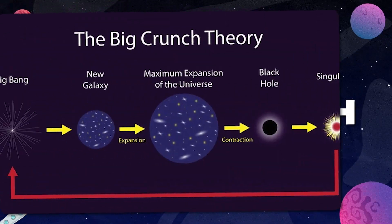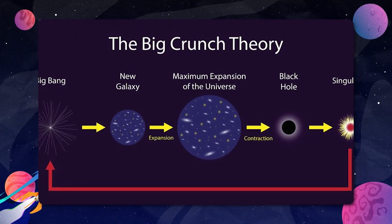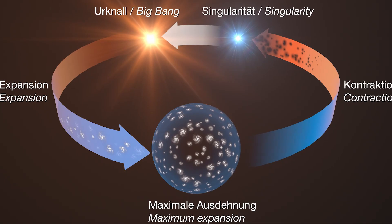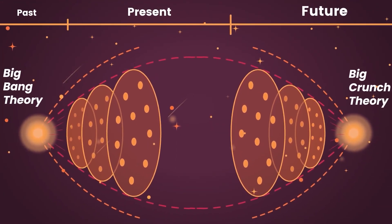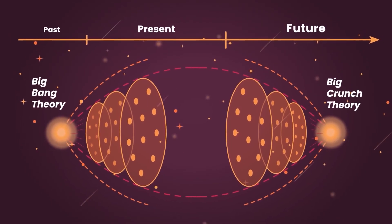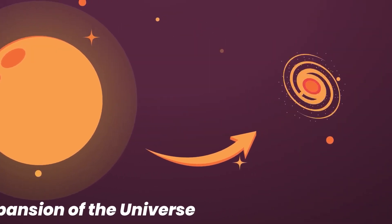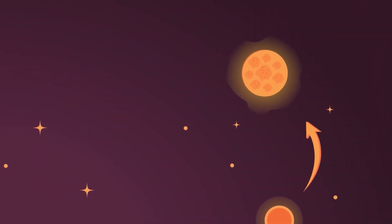The big crunch. Next, we have the big crunch. This is like the universe doing a U-turn. If there's enough mass, gravity could reverse the expansion, pulling everything back into a single point. It's as if the universe says, I changed my mind, let's go back to how we started.